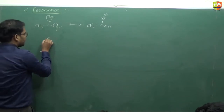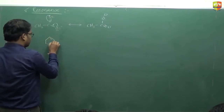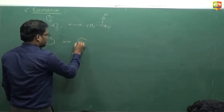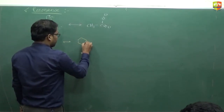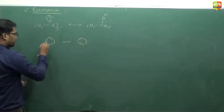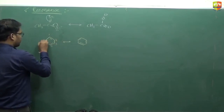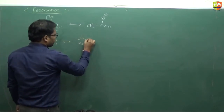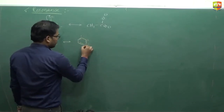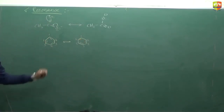Another resonating structure — we can take the example of benzene. This is also a resonating structure because the two molecules are different: we have a single bond between the first and second carbons and a double bond at positions 3, 4, 2, 5, and 6. This is resonance.